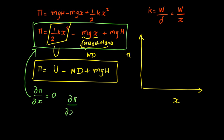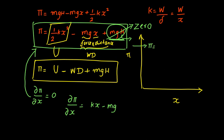Differentiating the equation, dπ/dx equals kx minus mg, and differentiating the constant term mgh gives zero. Setting dπ/dx equal to zero: kx minus mg equals zero. This is very important because when we differentiate the potential energy, the constant term mgh always becomes zero and plays no role. So we can rewrite the potential energy expression simply as: pi equals strain energy minus work done.